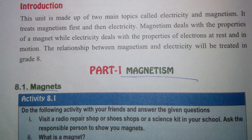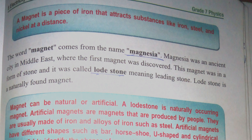Part 1: Magnetism. A magnet is a piece of iron that attracts substances like iron, steel, and nickel. The word magnet comes from the name Magnesia.